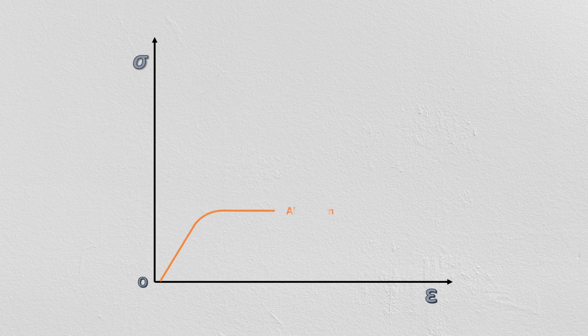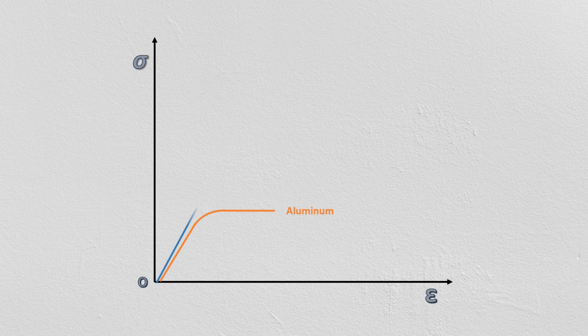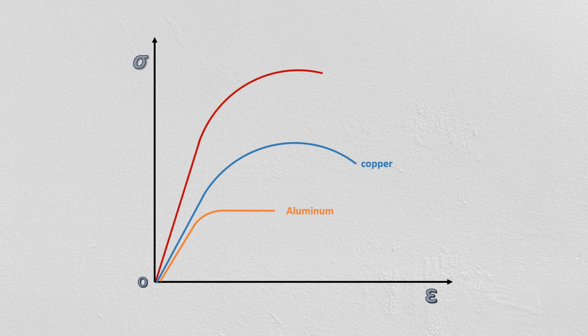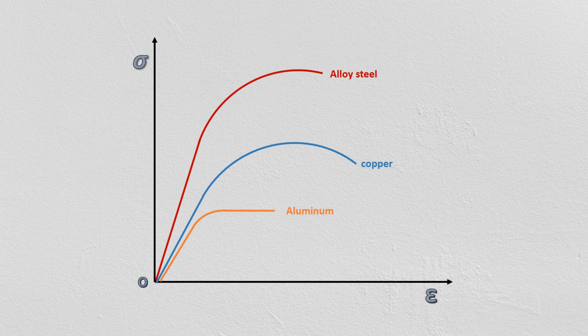Unfortunately, not all materials exhibit a well-defined yield point just like mild steel does. For example, aluminum, copper, and alloy steels. The stress and strain curve of such material will look like this.